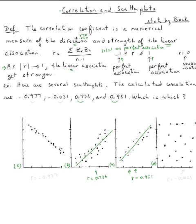Now let's look at the negative ones. This one is stronger — it follows a linear path that's even stronger, so this has to be r equal negative 0.977. This is very, very strong association. Here, there is hardly any association, so r equals negative 0.021.